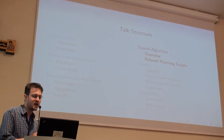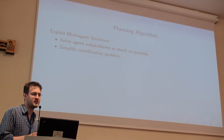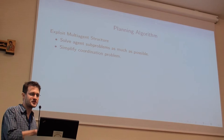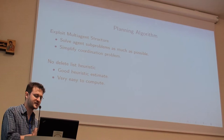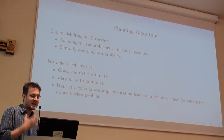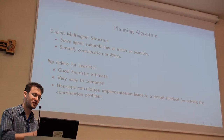Now I'll explain the search algorithm. The idea was basically to take FF and exploit our decomposition at every opportunity — always solve agent subproblems and simplify the coordination problem as much as possible. FF was chosen because it has a very good heuristic estimate that's easy to compute, and it also has nice qualities in its computation that allow us to exploit relaxed planning graphs to solve the coordination problem.